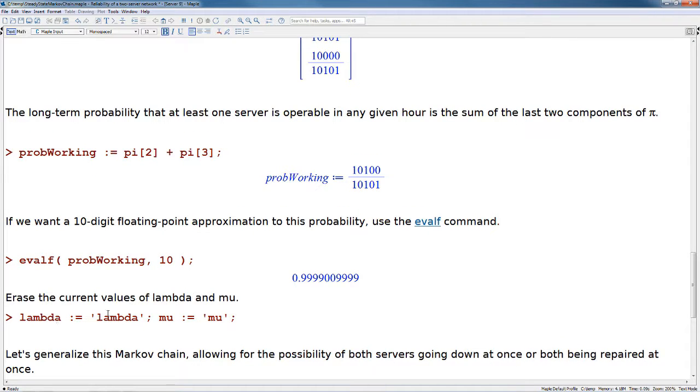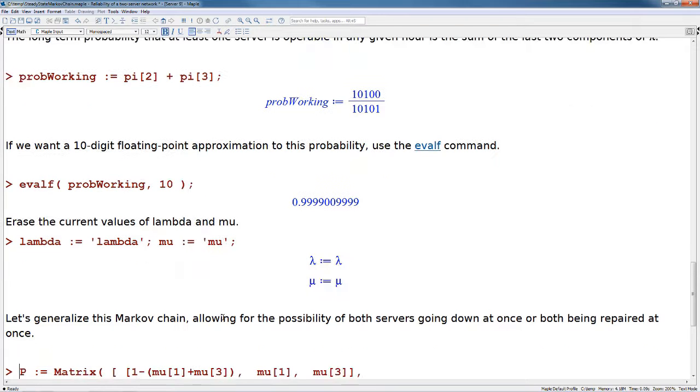To reclaim lambda and mu and make sure they're both symbolic, we can do an unassignment. We do lambda := 'lambda' in single evaluation quotes, as well as mu := 'mu' in single evaluation quotes.